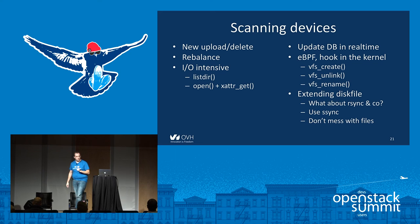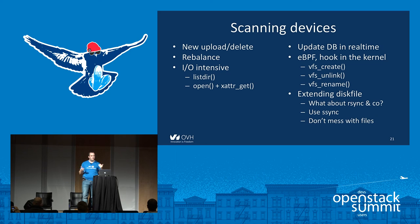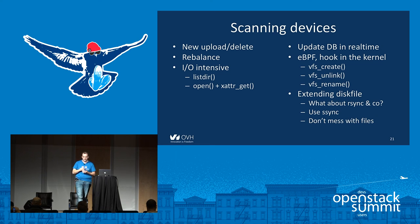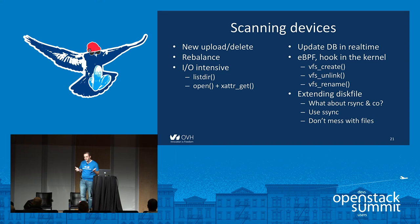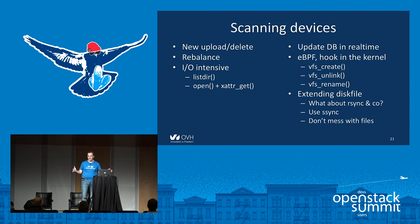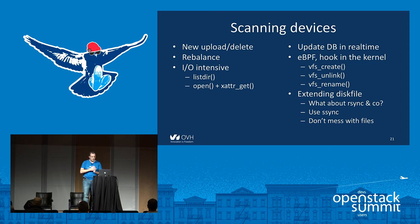Fourth problem: we were scanning devices to build the mapping between containers and object hashes. The problem is it's very IO intensive — scanning all devices every night involves a lot of listdir calls, and every file must be opened to read the extended attribute to get the container. And you must do it every day because every day there are new uploads, new deletes, and if you do a rebalance, a lot of data moves between devices.